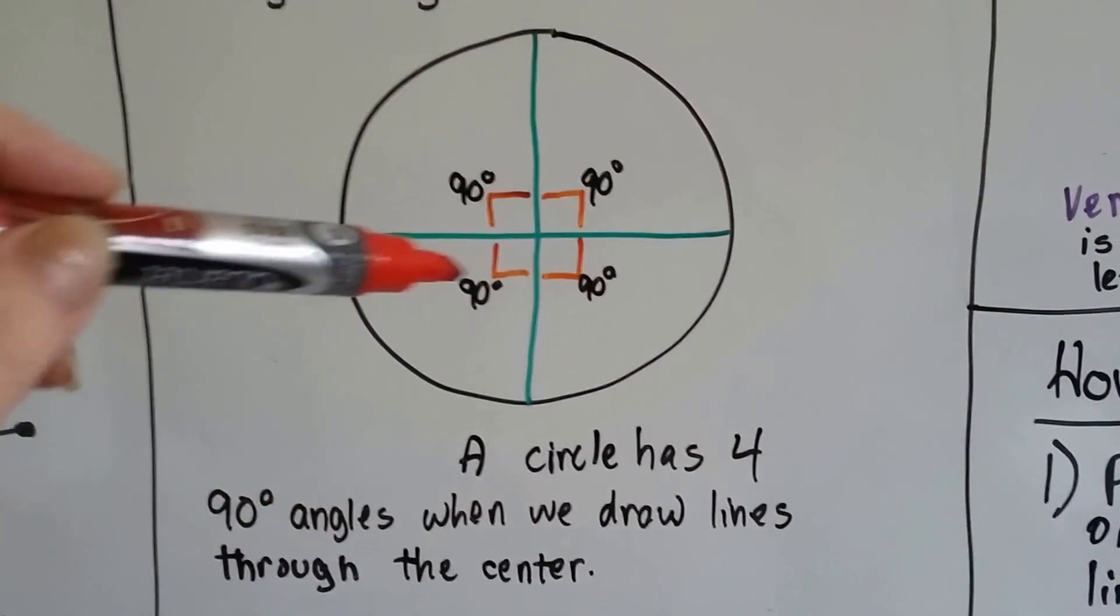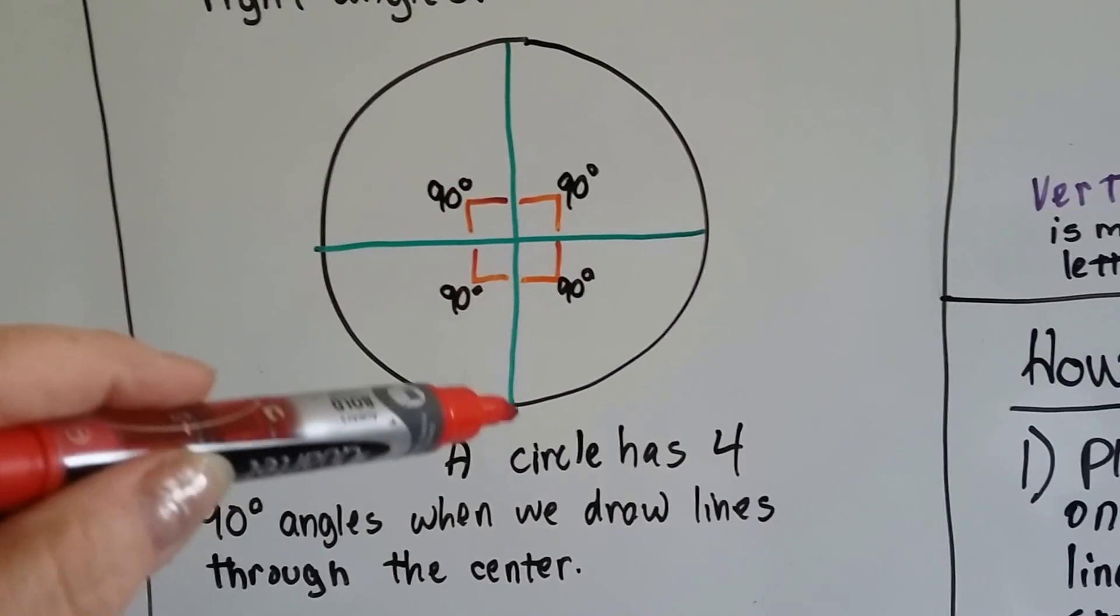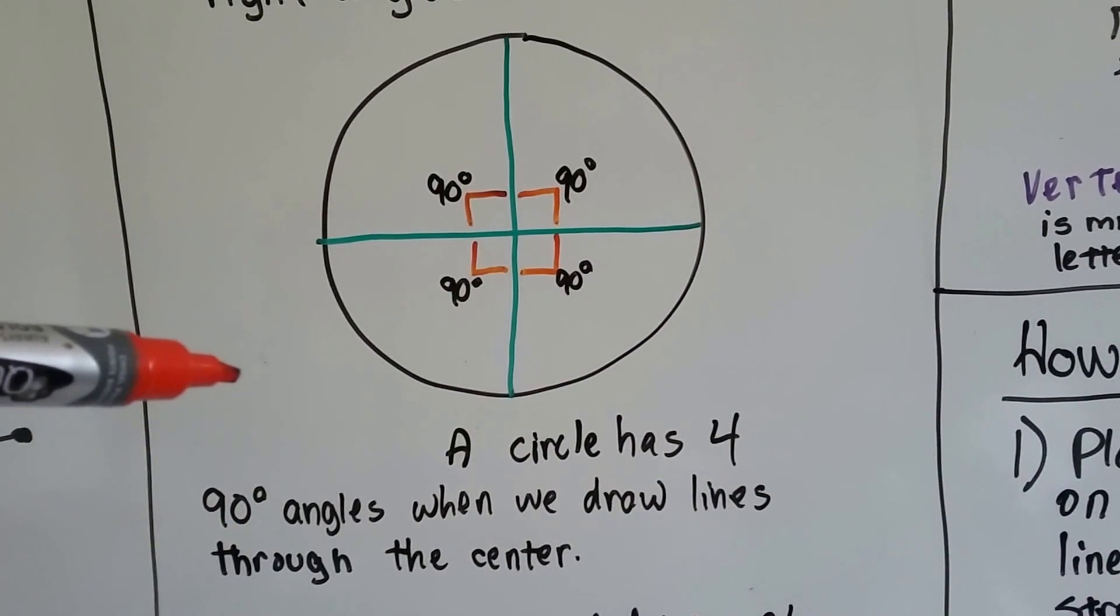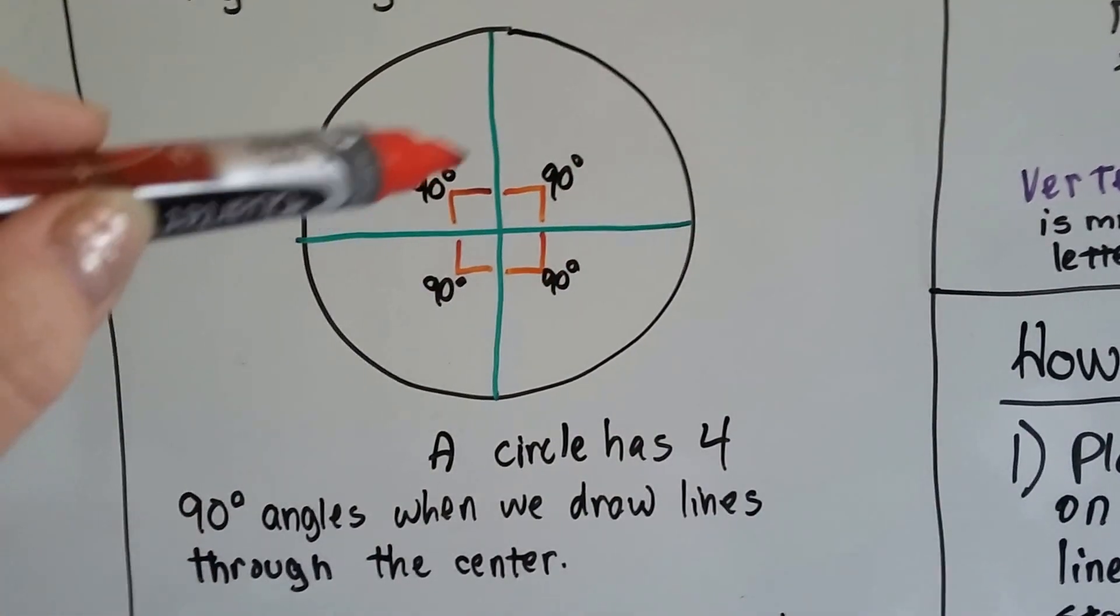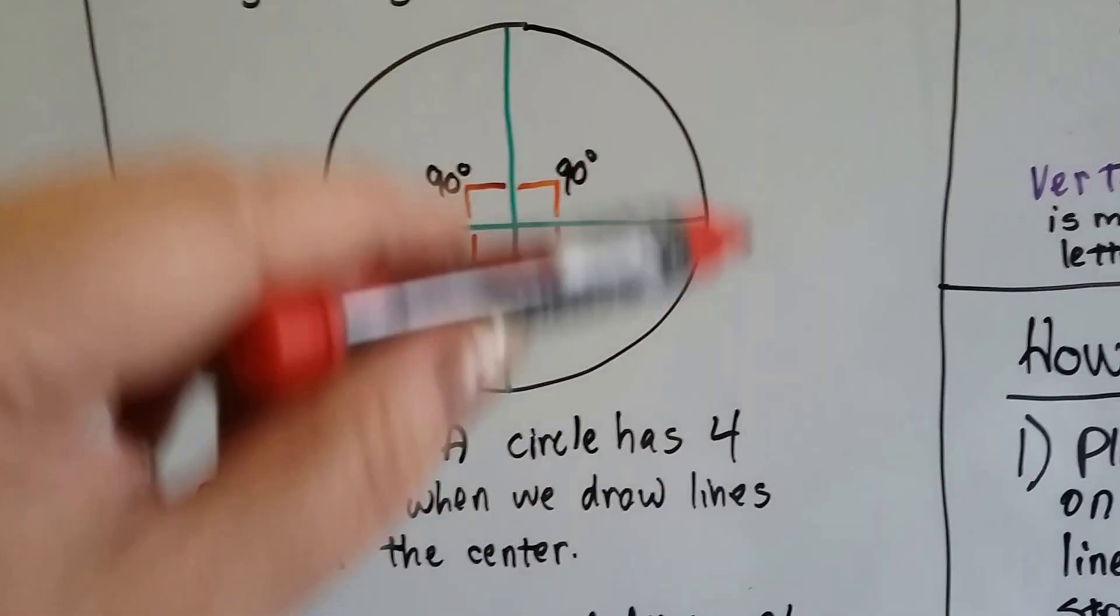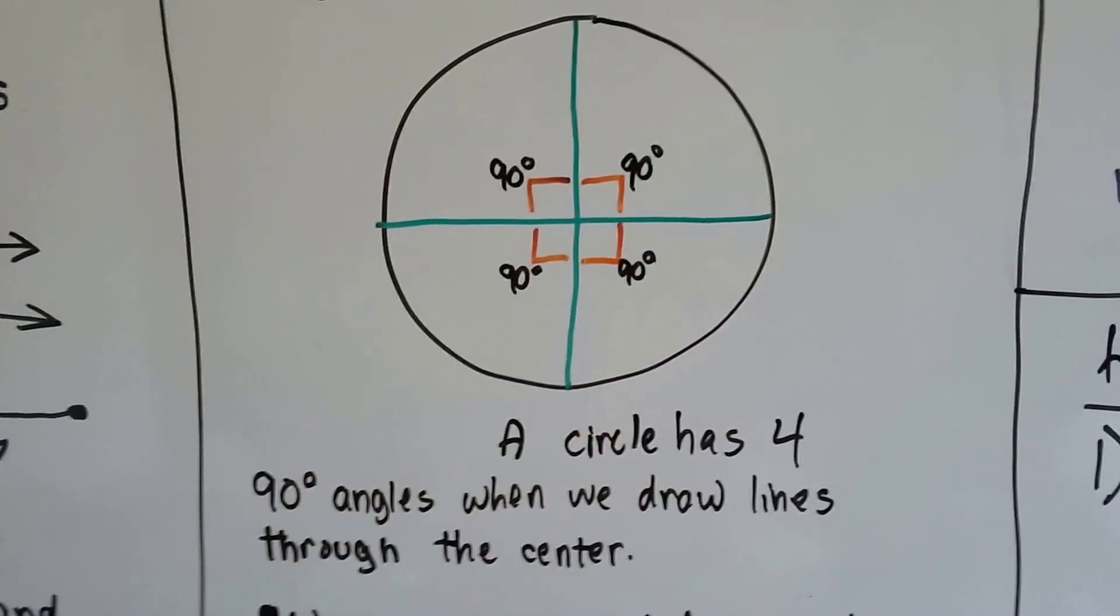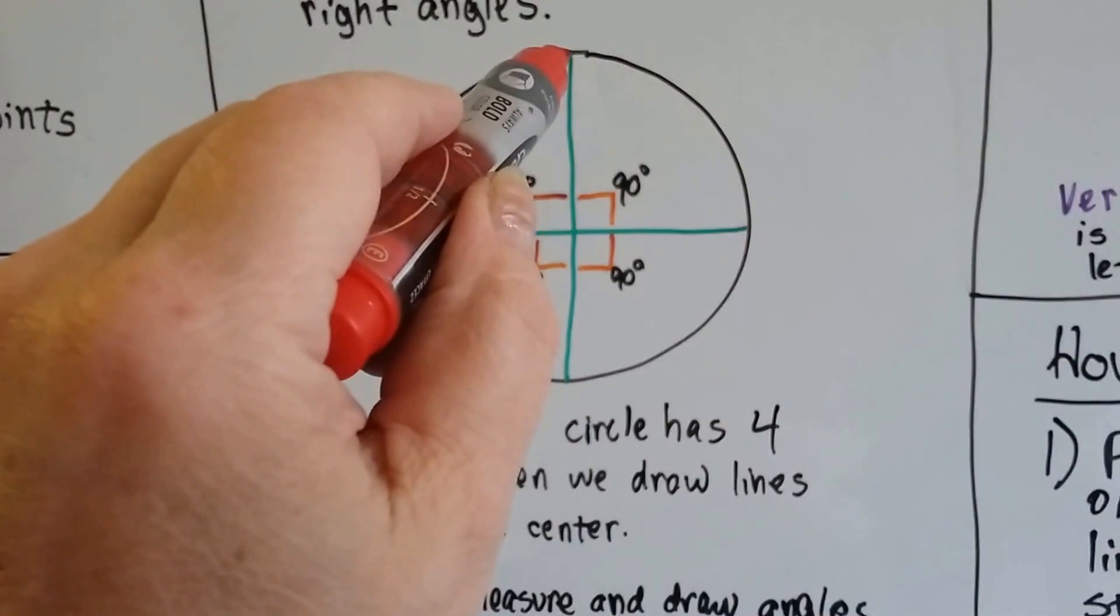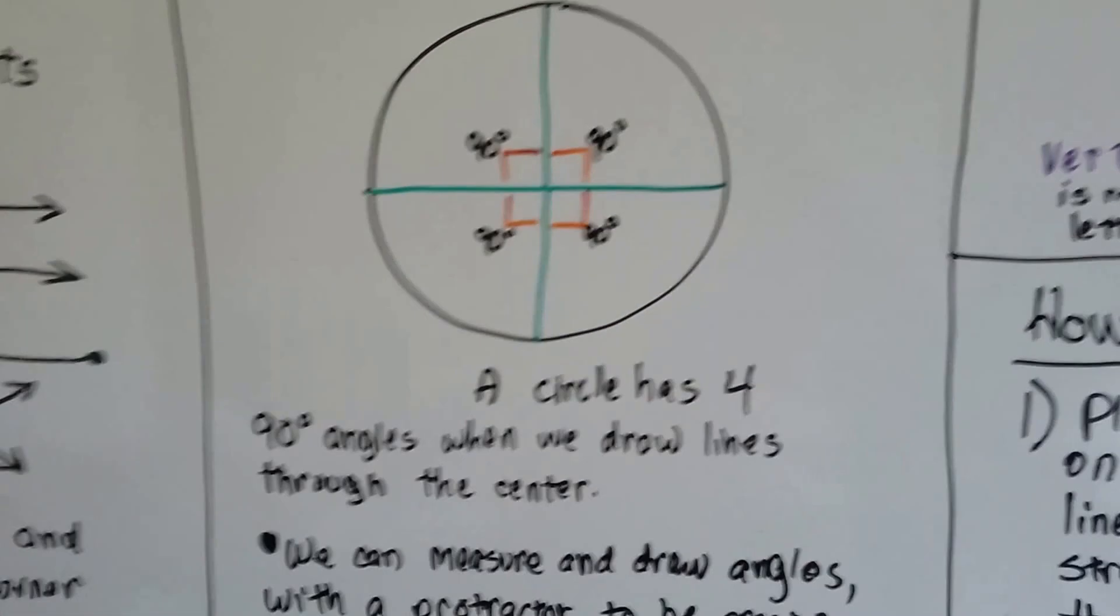A circle has four 90-degree angles when we draw lines through the center. When we draw two crossing lines through the center of a circle, we make four 90-degree little box angles there. And what's funny is this is perfect because 90 times 4 is 360, and a circle is 360 degrees around. It's like when someone says, oh, I did a 360. It means they started here and they went all the way around one time. Okay? Or in skateboarding, a 180 is going from here to here. It's like going halfway around. And a 720 is going two times. Right?